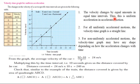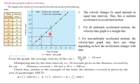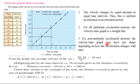This is uniform acceleration and the body is in accelerated motion. For all uniformly accelerated motion, the velocity-time graph is a straight line. In both uniform motion and uniform acceleration, if the graph shows a straight line it means the object is in uniform motion or uniformly accelerated motion.